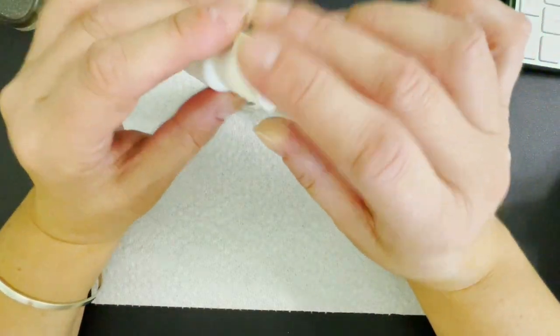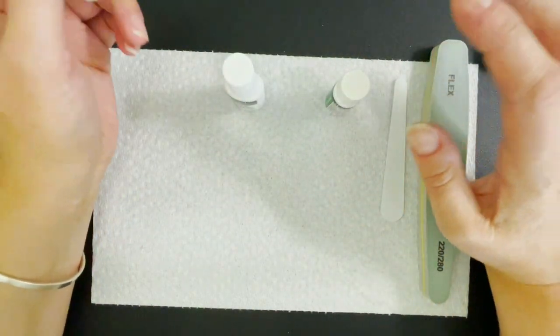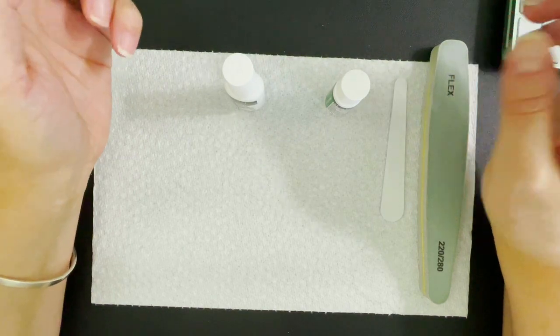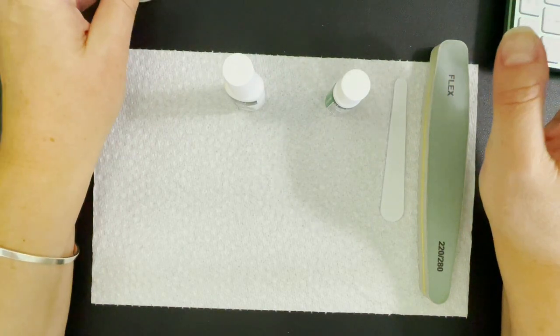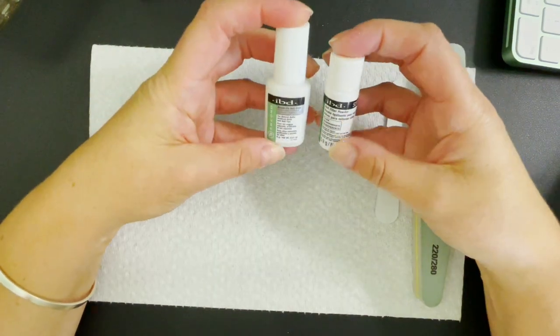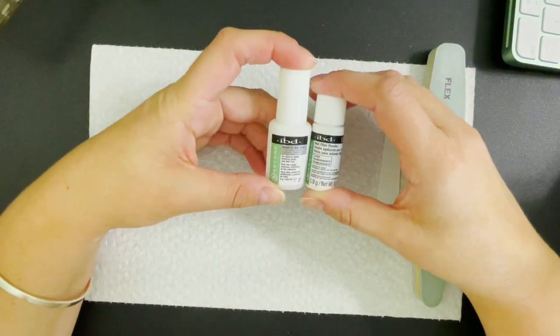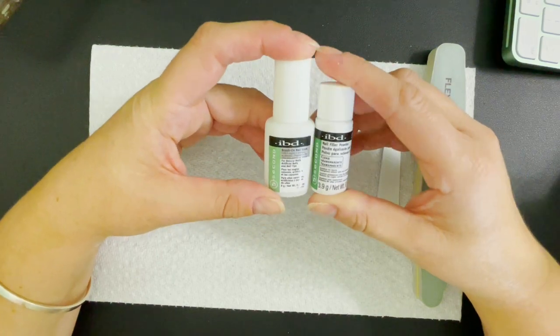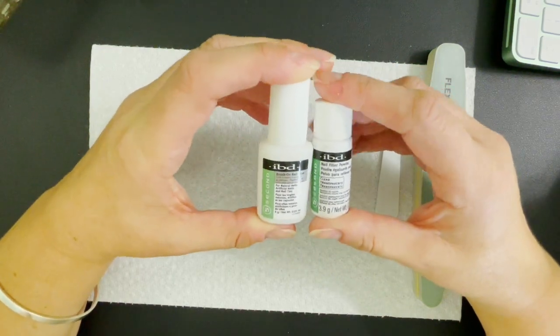So first thing to fix a broken nail, several methods. I've used the method where you use a teabag to seal a crack in a nail. There are so many videos on YouTube that show that. So if that is something that you're interested in, let me know and I can do a video for you or just search on YouTube for the teabag method.